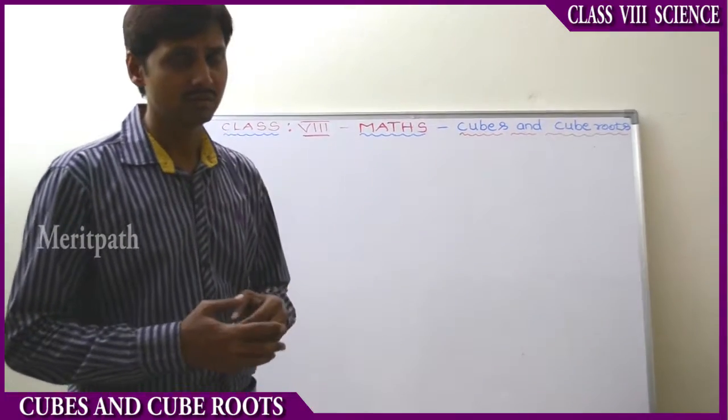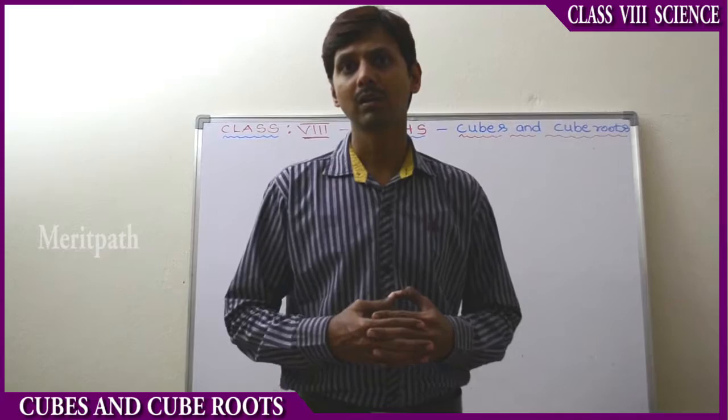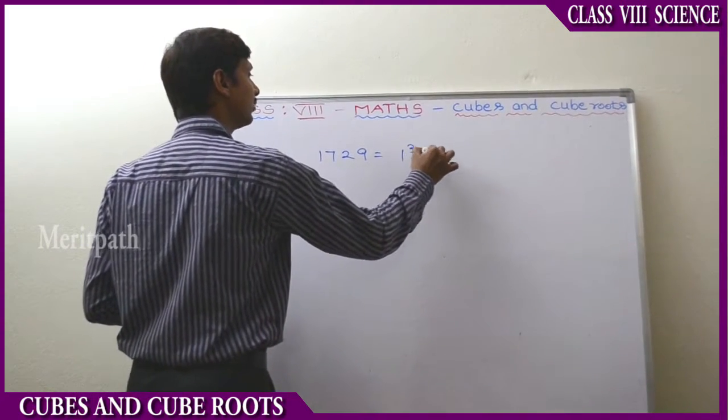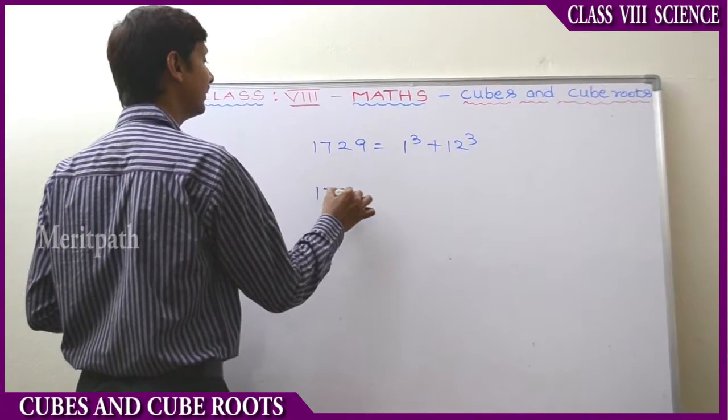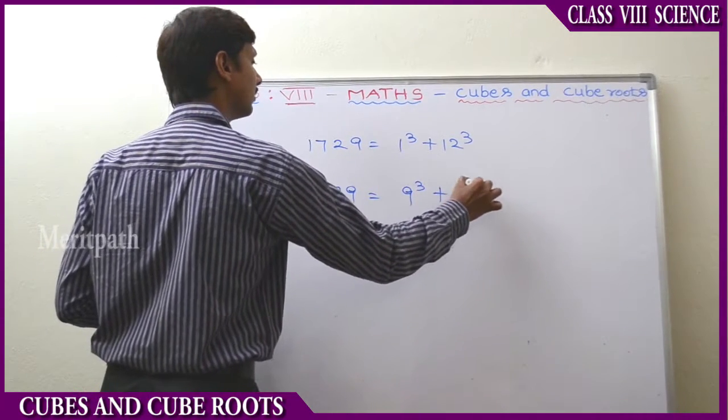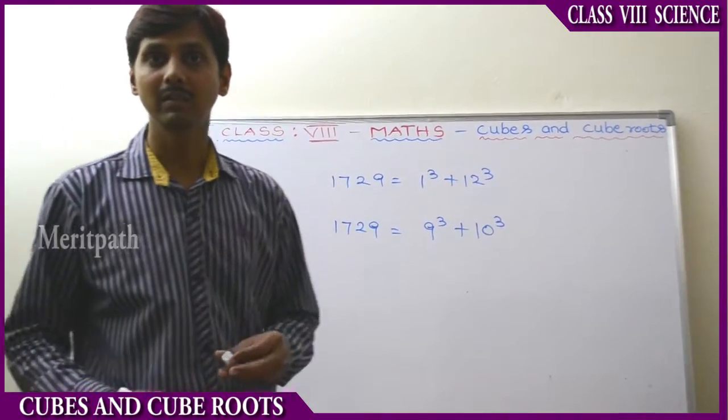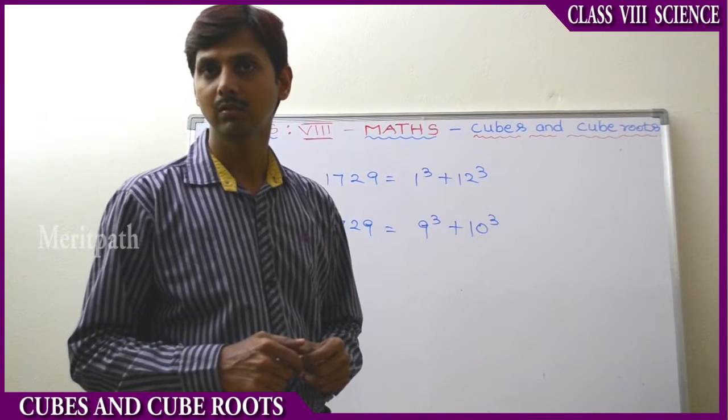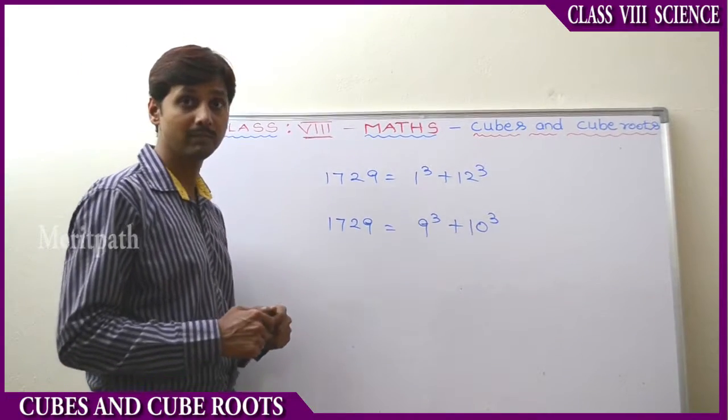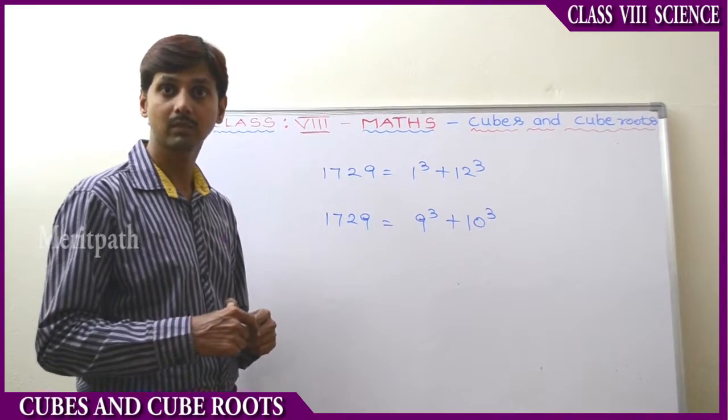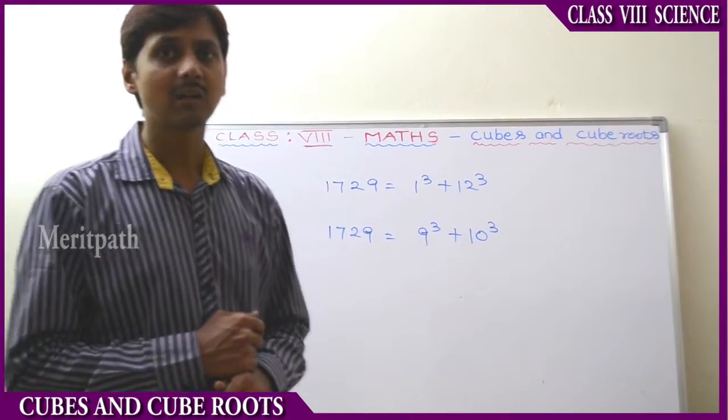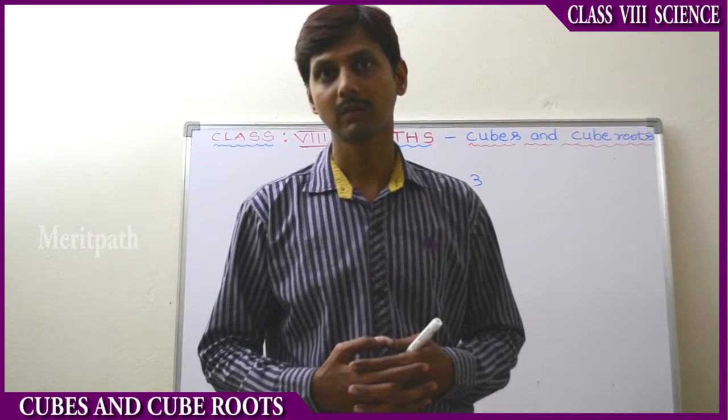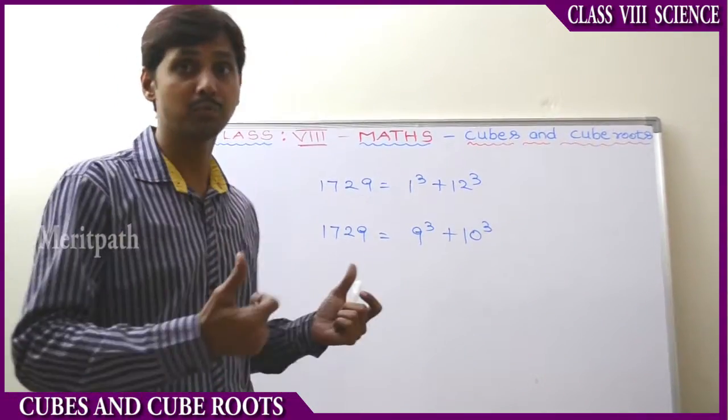Mr. Hardy said it's 1729. The taxi number was 1729. So immediately Ramanujan said 1729 is the smallest number which can be expressed as 1³ + 12³, and also it can be expressed as 9³ + 10³.